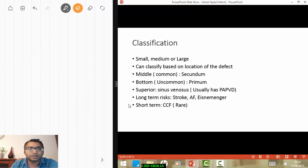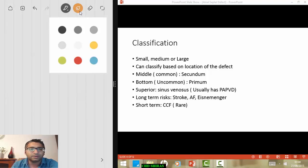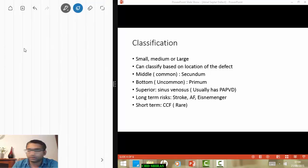Okay, so the classification of the defects you could call them small, medium, or large. It's one way of classifying it, but perhaps a more useful way of classifying it is actually by the location. So let me just draw a picture over here. So you have your left atria over there, your right atria over there, and your interatrial septum over there.